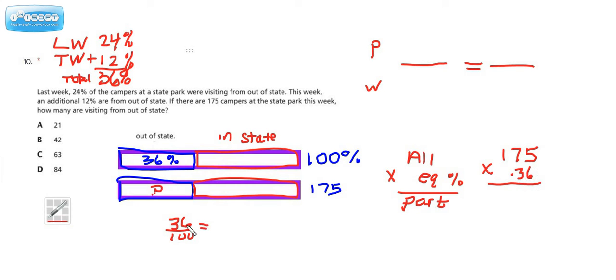Now, you might want to do, you might like fractions. If we simplify this, that would end up being 9/25. This divided by 4 is 9, this divided by 4 is 25. If you think it's easier to multiply 175 times 9/25, that's an option.